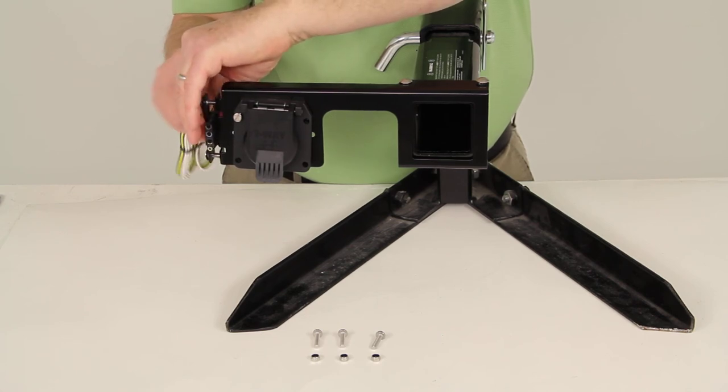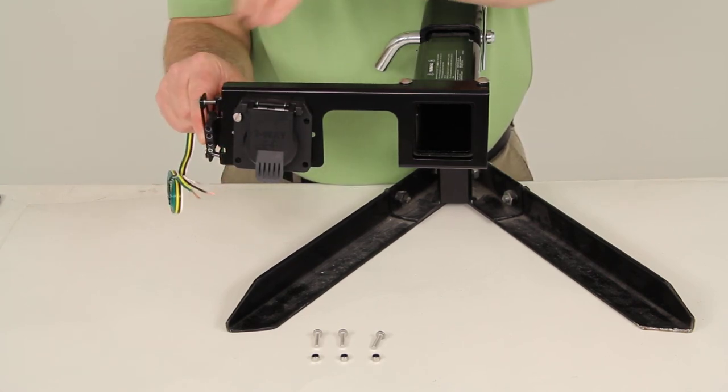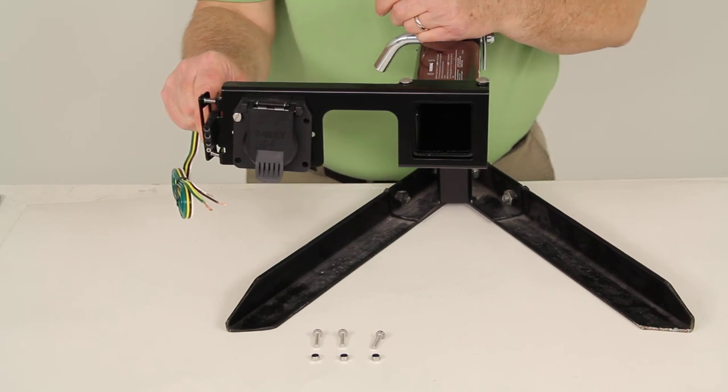Just like that, and then hold it together and then bolt this down and it would actually hold your four or five-way flat also on the bracket.